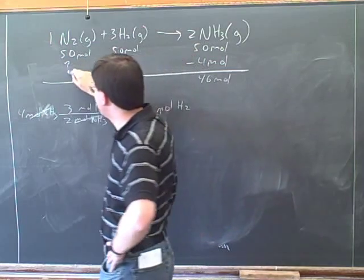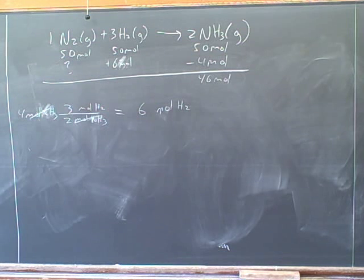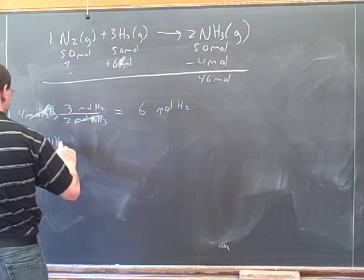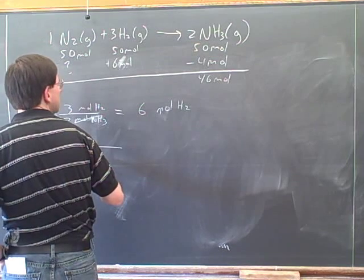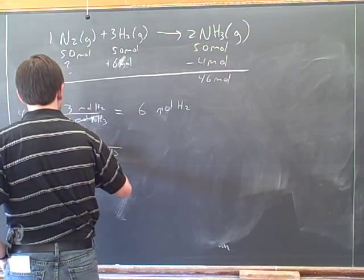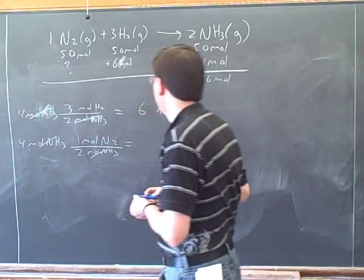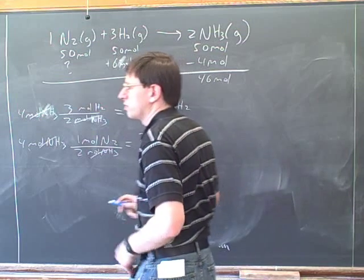Let's figure out how to get this number here. So you could do the same starting approach: start with 4 moles of NH3, and then put 1 mole of N2 over 2 moles of NH3. The NH3 units will cancel, and what do we get? 2 moles of nitrogen, which is what we want.